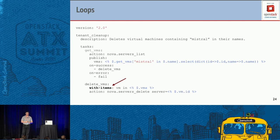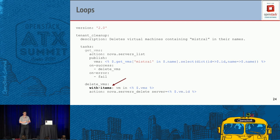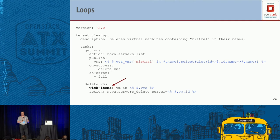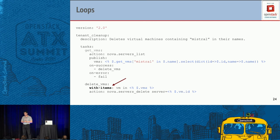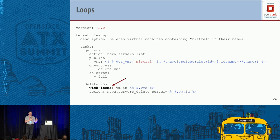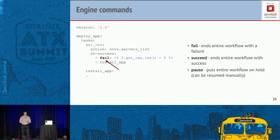Looping: we can iterate over a collection of elements using the keyword 'with-items.' The action associated with the task is applied for each element in the collection. Although it looks like sequential processing, Mistral actually processes all elements in parallel, allowing you to exploit parallelism and get results much faster. A specific property allows you to limit concurrency levels — you can make it sequential if needed — but by default it's all done in parallel.